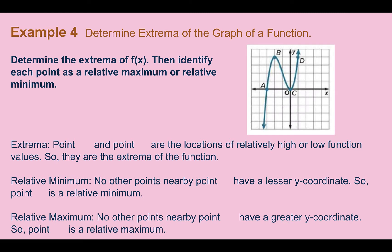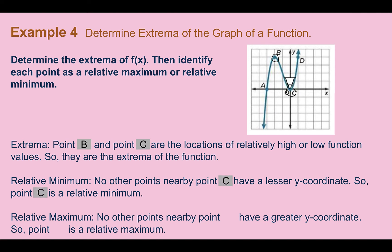Example 4: Determine extrema of the graph of a function. Determine the extrema of f of x, then identify each point as a relative maximum or relative minimum. The extrema are going to be at point B, up there, and point C. That's the high point and then the low point. The minimum is point C — that's where it's at the bottom, the lowest. And then our maximum is point B, since no other point around it is higher.